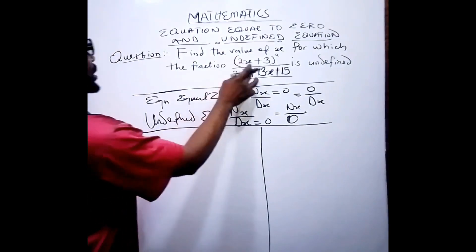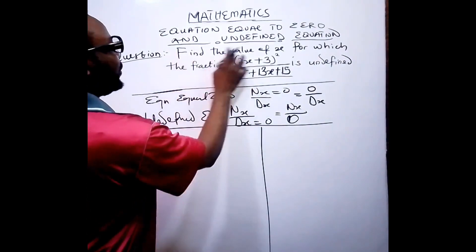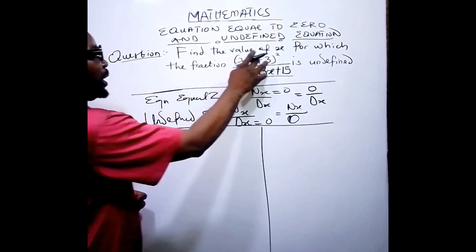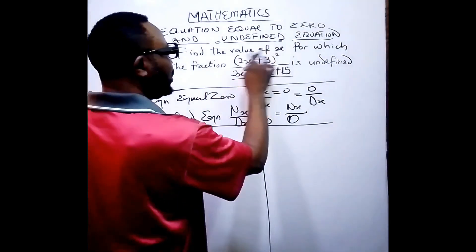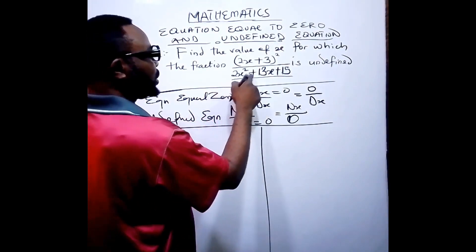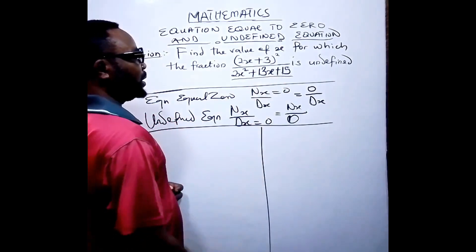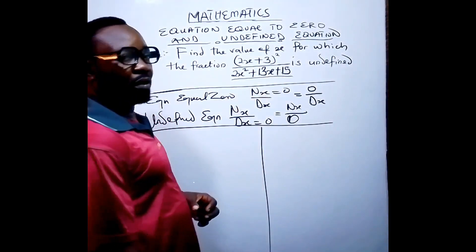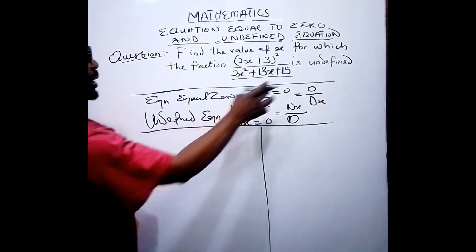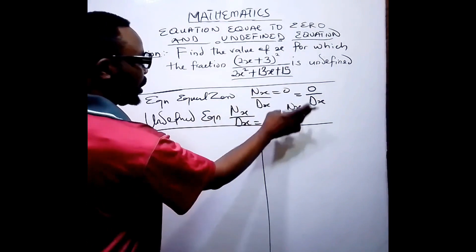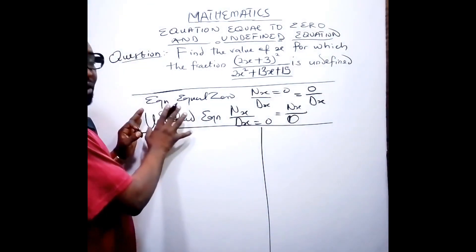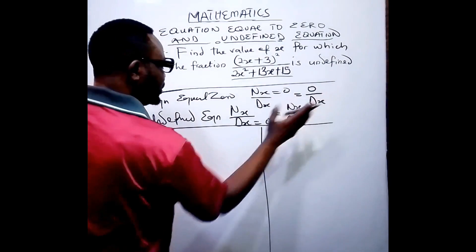This question says: find the value of x for which the fraction (2x + 3)² all over 2x² + 13x + 15 is undefined. I am going to write this question and work with what we have discussed initially.